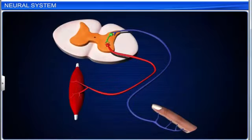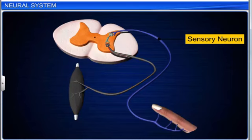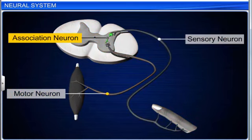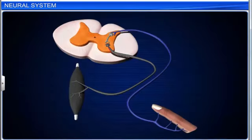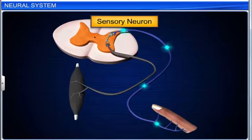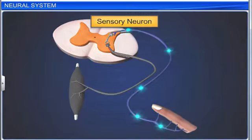On the basis of the functions of neurons, they can be divided into three types: sensory, motor, and association neurons. Sensory, or afferent neurons, are found in the sense organs. They receive impulses from receptors and direct them towards the central nervous system.